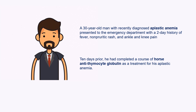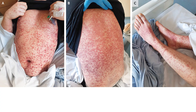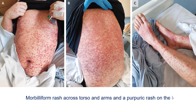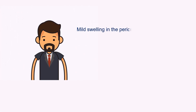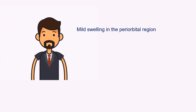His body temperature was 39.6 degrees Celsius. Physical examination was notable for a morbilliform rash across his torso, as seen in panel A and panel B, and a purpuric rash on the legs, as seen in panel C. Mild swelling was noted in the periorbital region, but the mucous membranes were not involved.